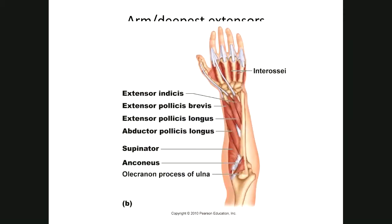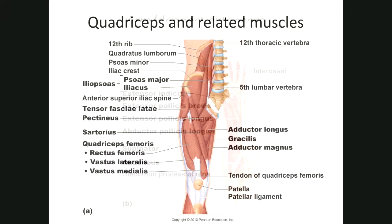Going deeper, if you take a more detailed anatomy class you'll need to look at each of these individually — like the interossei and extensor indicis, which goes to your index finger. There's also a supinator, but we won't go into detail on that.